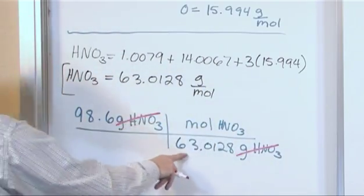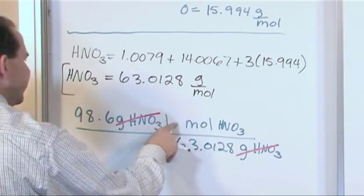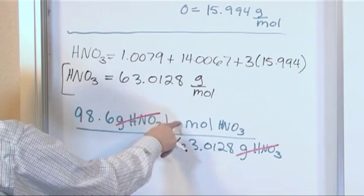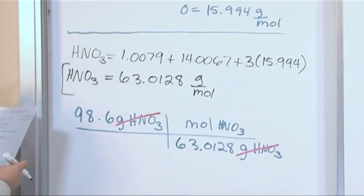Now notice, since we flipped it over, the 63 is on the bottom now. So now you're dividing these numbers. This is an implied one. So you're multiplying by one, dividing by this. So when you do this, 98.6 divided by that 63 number down there, what you're going to get is the number 1.56.